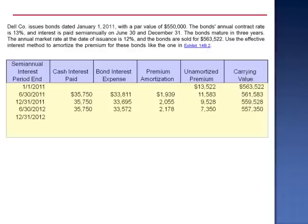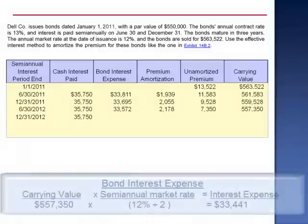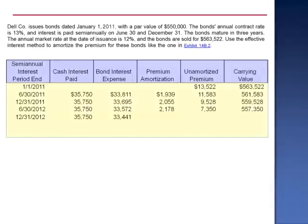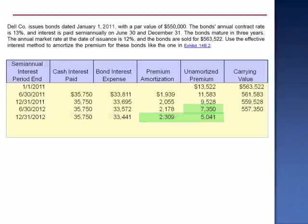December 31, 2012: interest paid $35,750. Bond interest expense — 6% of $557,350 — is $33,441. The amount of the premium amortization is $2,309. The unamortized premium drops to $5,041 and the carrying value drops to $555,041.